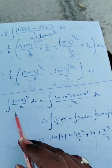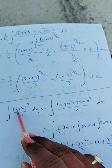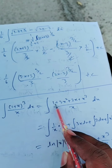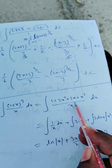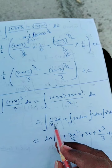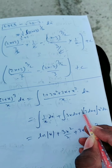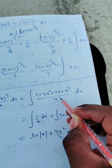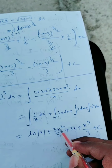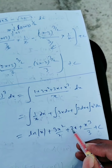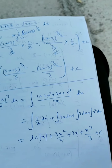Hope you understand. Next question: integration of 1 plus x whole cube by x dx. Expand using a plus b whole cube equals a cube plus 3a square b plus 3ab square plus b cube. Dividing each term by x and separating: 1 by x dx gives ln mod x; 3x dx gives 3 times x square by 2; 3 dx gives 3x; and x cube dx gives x cube by 3, plus c. Thank you.